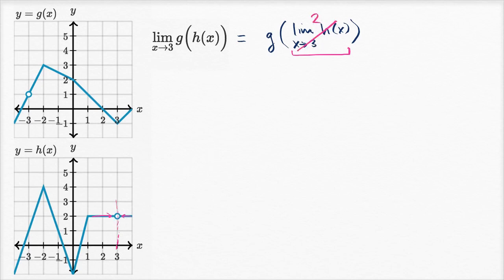So this all simplifies to g of two. Now what is g of two? When x is two, g of two is zero. So this right over there is going to be zero, and we're done.